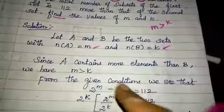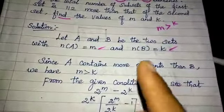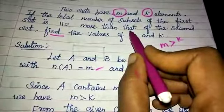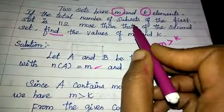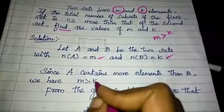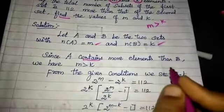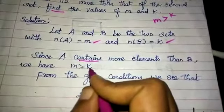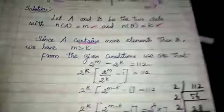Since A contains more elements than B, we have M greater than K.